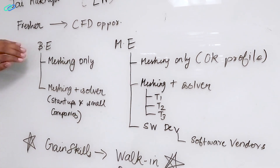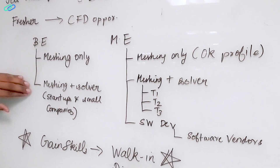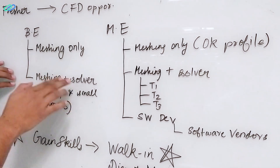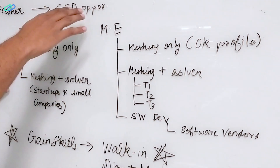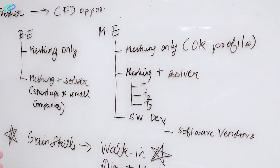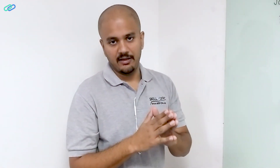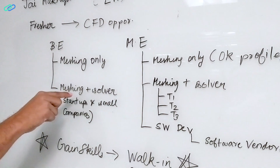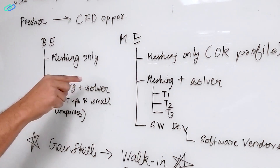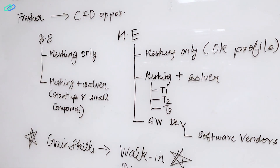The second type of opportunity is meshing plus solver, and this is kind of what a CFD engineer does. They use tools like Pointwise to create meshes, or tools like ANSYS Mesher or StarCCM, and they mesh the geometry and use the solver to run the simulation.